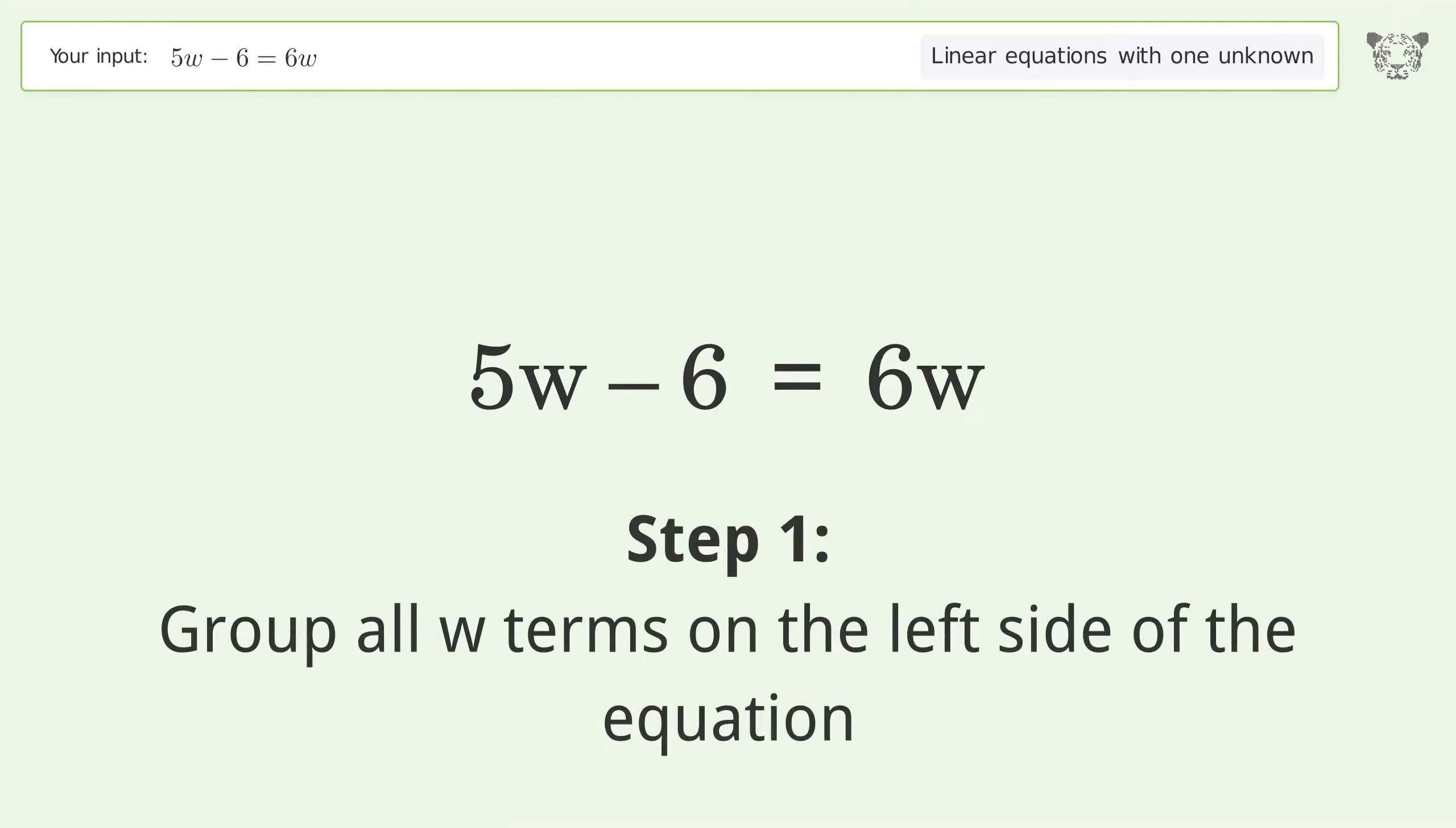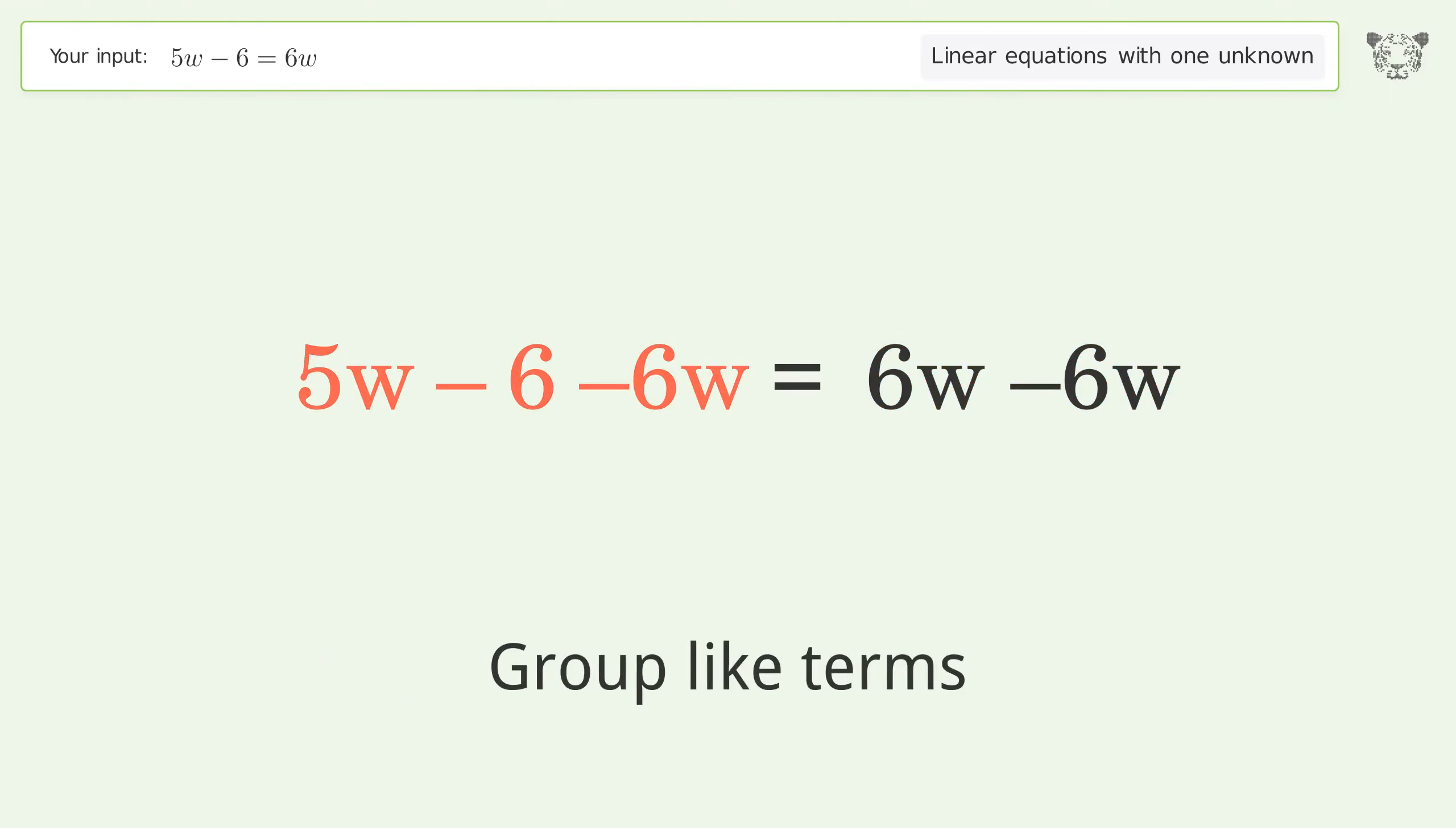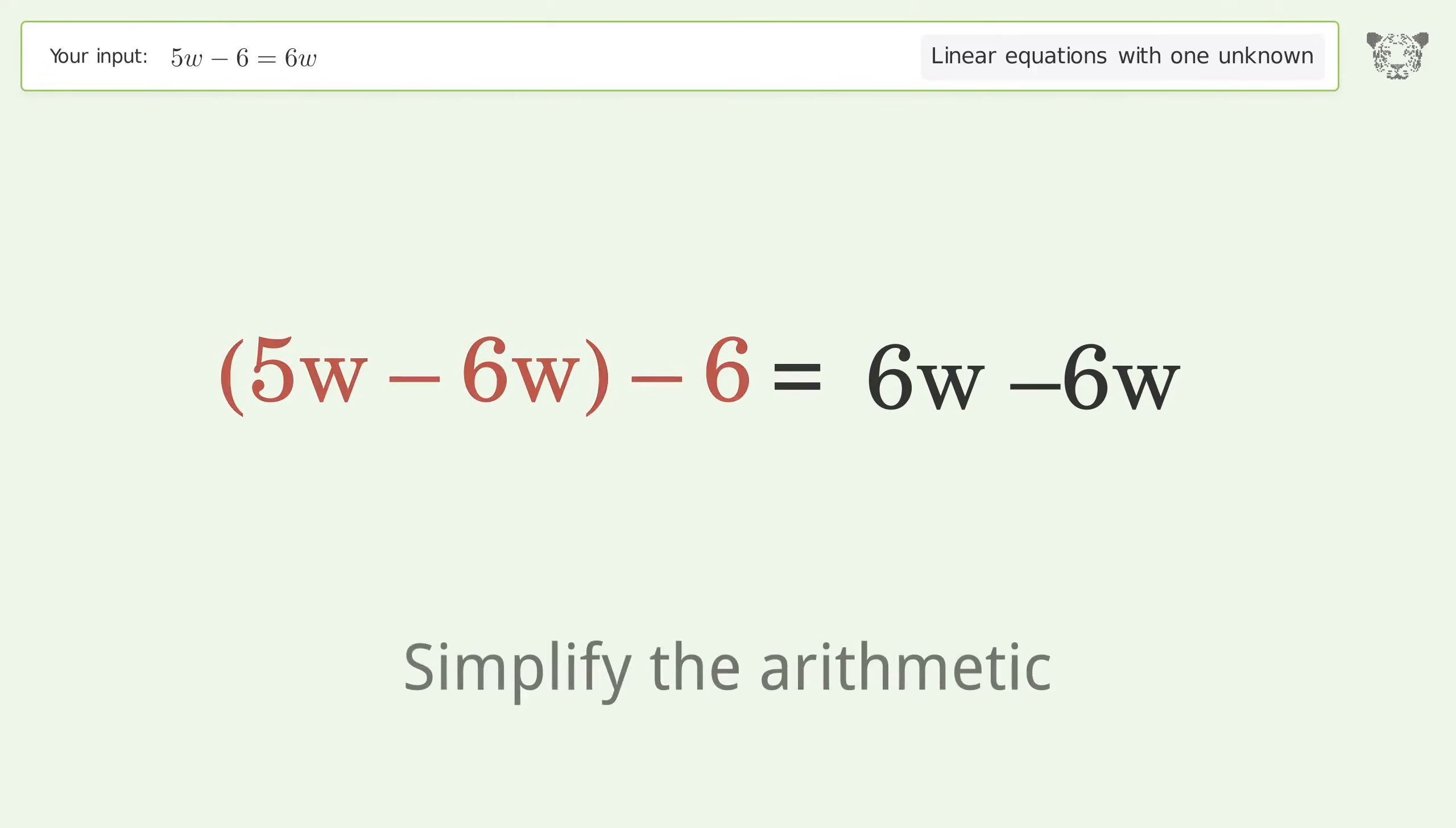Group all w terms on the left side of the equation. Subtract 6w from both sides. Group like terms. Simplify the arithmetic.